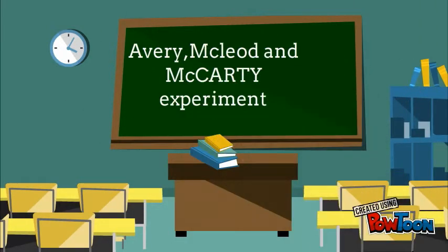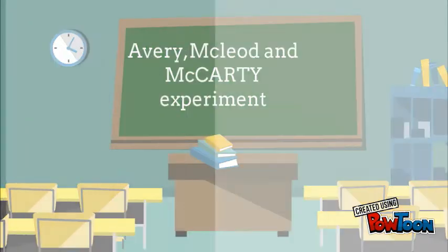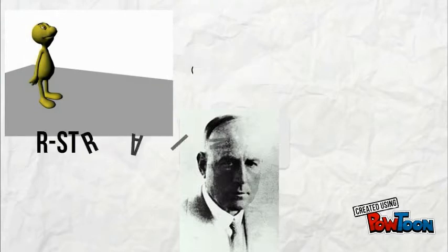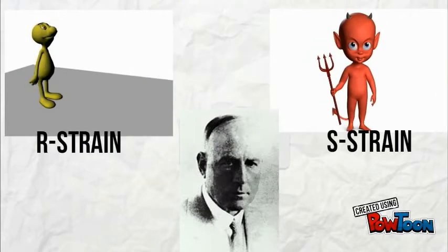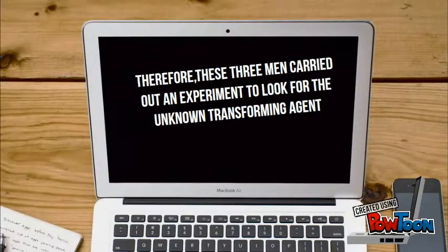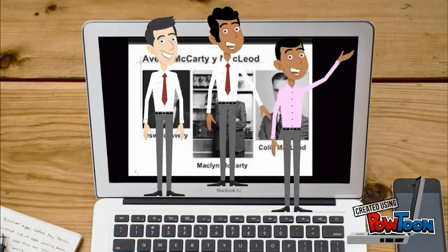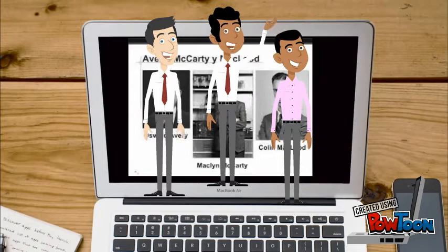Avery, McLeod and McCarty Experiment. Griffith did not know what the transforming agent was that caused non-virulent R strain bacteria to become virulent S strain bacteria. Therefore, these three men — Oswald Avery, Colin McLeod, and McCarty — carried out an experiment to look for the unknown transforming agent.